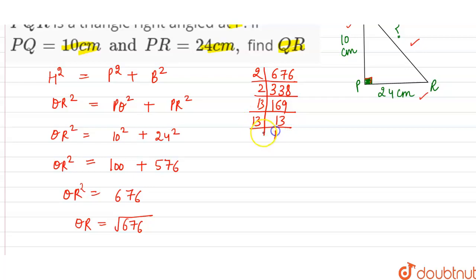The pairs are 2 and 13, so this is equal to 2 into 13. The value of QR is 2 into 13, which is equal to 26 centimeter. So QR will be equal to 26 centimeter, and this is the required answer.